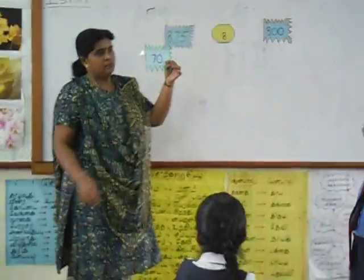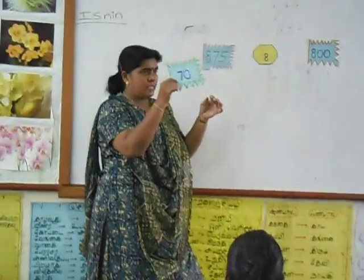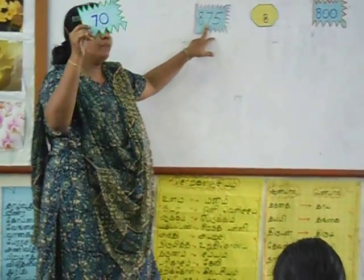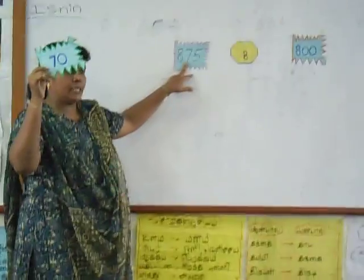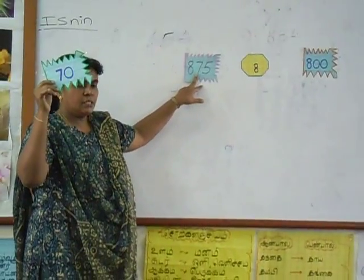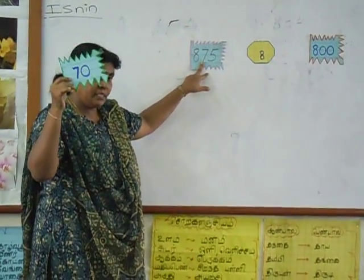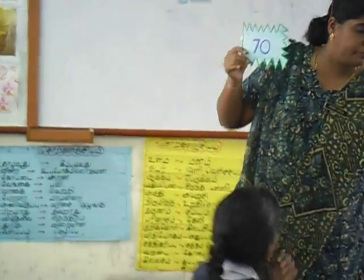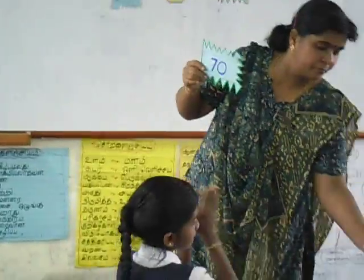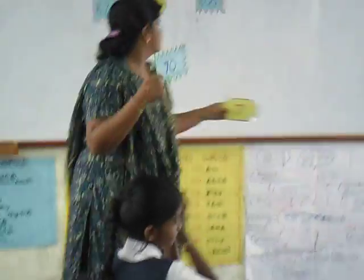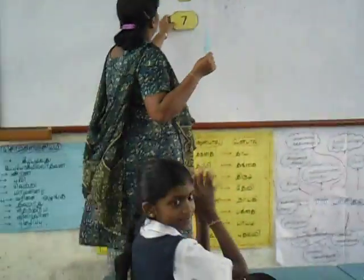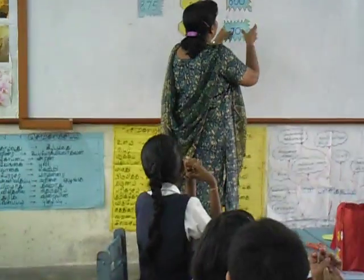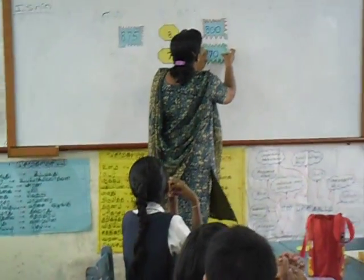Yes, this number is right, isn't it? Yeah. Okay, what is the digit value for 7? 70. Okay, 70. Go and sit down — give her a clap! So digit value for 7 is 70. Right, isn't it? Yeah.